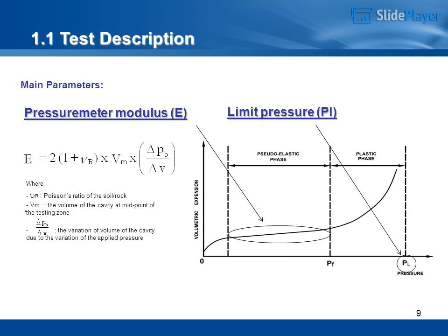Main parameters from the test are: the Pressuremeter Modulus E, and the Limit Pressure PL. In the formula, R is Poisson's ratio of the soil/rock, Vm is the volume of the cavity at the midpoint of the testing zone, and delta-V/delta-P is the variation of volume of the cavity due to the variation of the applied pressure.